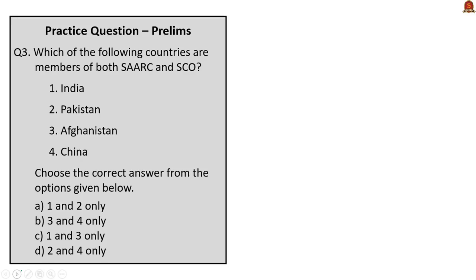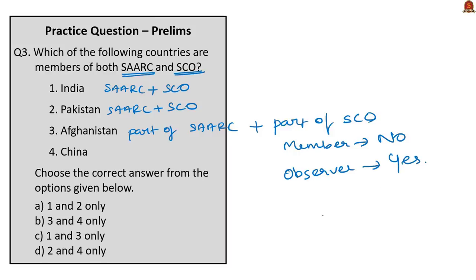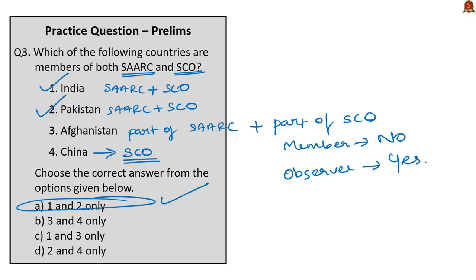The third question asks which countries are members of both SAARC and SCO. India is a member of both. Pakistan is also a member of both. Afghanistan is part of SAARC but is only an observer — not a full member — of SCO. China is a member of SCO but not SAARC. Therefore, only India and Pakistan from the given options are members of both, making the correct answer option A: one and two only.